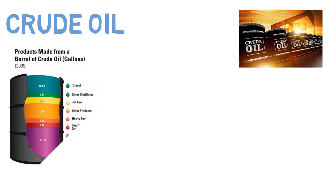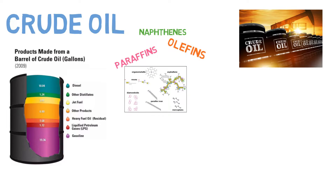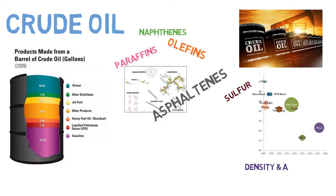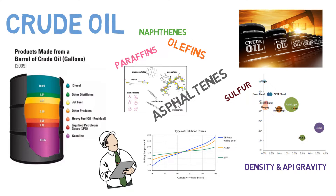We then continue with crude oils — what are they, what are their main contents, what are paraffins, naphthenes, olefins, and asphaltenes? And more importantly, sulfur content and density, also known as API gravity.